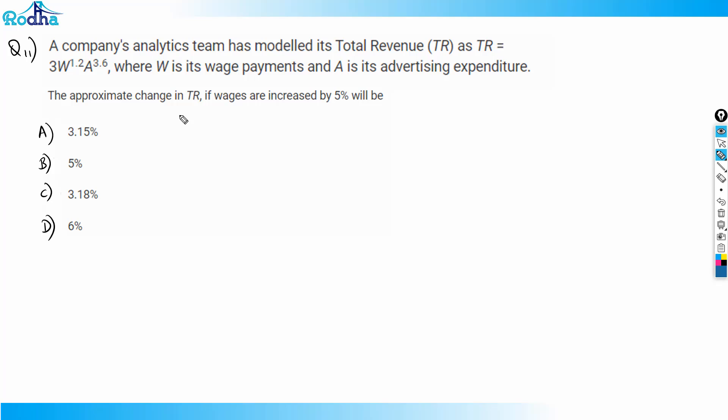So just write this equation now. Let me write this: TR is given here as 3W raised to power 1.2 and A to the power 3.6. Now, approximate change in TR I need to calculate if wages are increased by 0.5 percent, that is 5 percent.